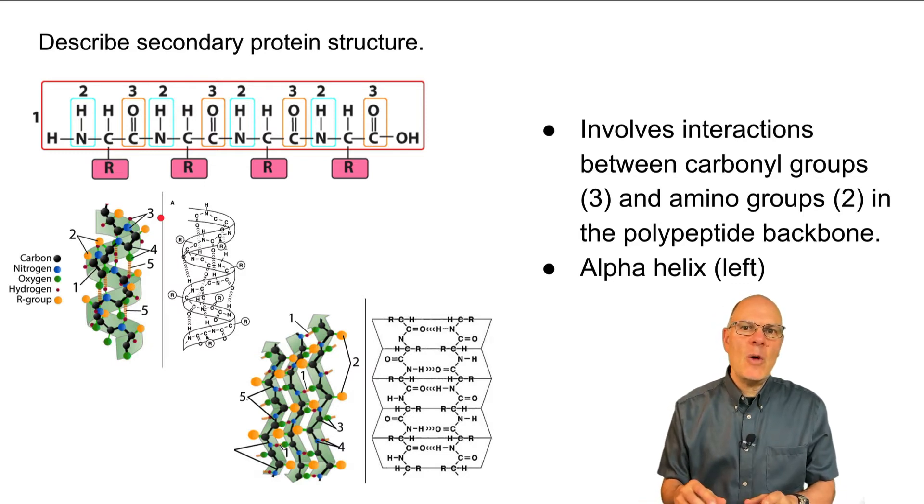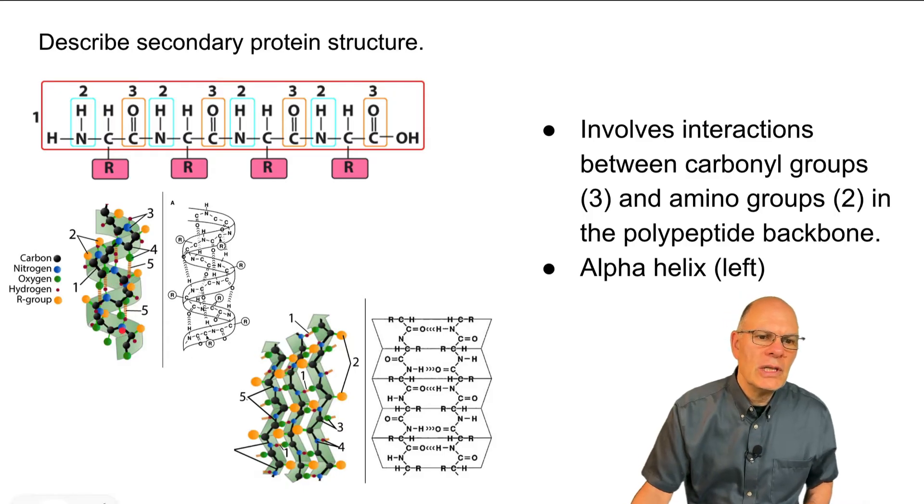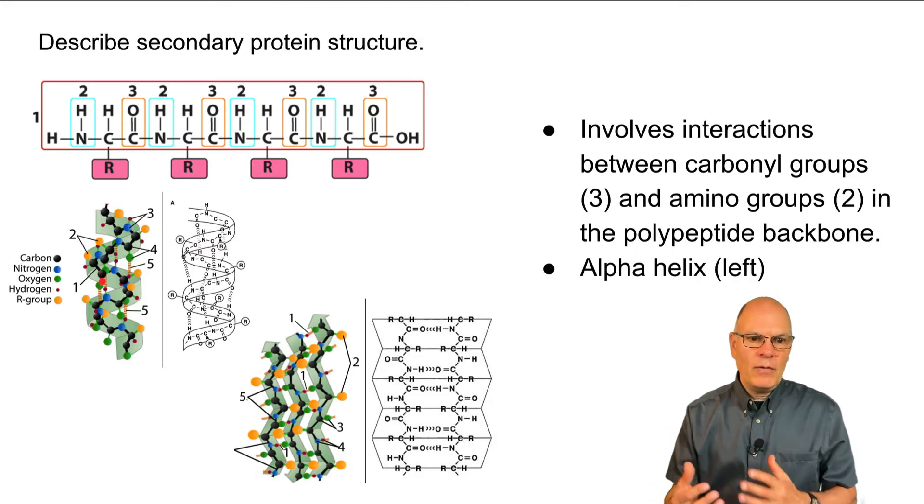One of the shapes to know about is called an alpha helix and that's kind of a corkscrew over here. So you can see that there's a hydrogen bond that's stabilizing this, hydrogen bond, hydrogen bond. So that forms that shape.